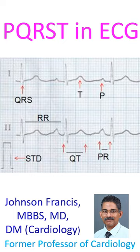Atrial repolarization is called the TA wave. The TA wave is not visible because it is shallow and superimposed on the PR segment, QRS, and part of the ST segment. RR interval is the distance between the onset of two consecutive R waves.